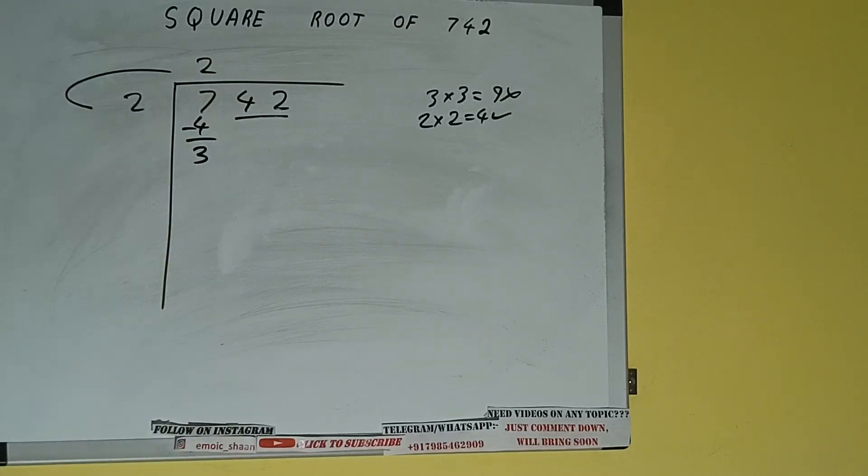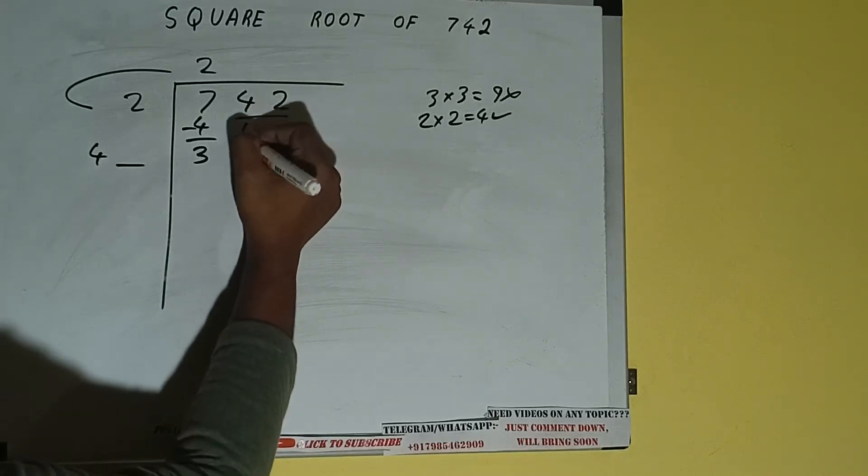We did 2 into 2, so add both. So 2 plus 2 will be 4, write it here and keep a digit extra. And this number we need to make it big, so bring the next pair down and it will be 342.